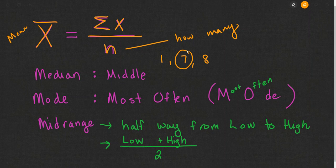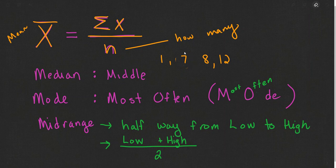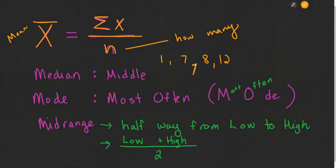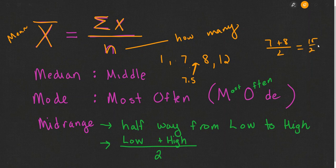If there's an even number — say we add 12 to the set — the middle falls somewhere between the 7 and 8. We simply find the midpoint between 7 and 8. What lies between 7 and 8? That's 7.5, because 7 plus 8 divided by 2 is 15 divided by 2, or 7.5. So the median is the number in the middle. If there's an even number of values, we take the two middle numbers and find their midpoint.